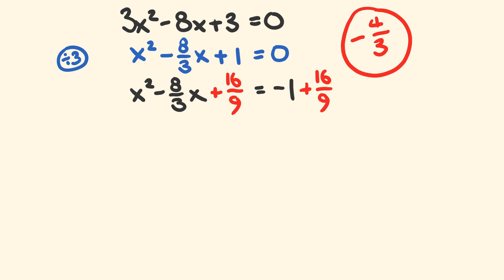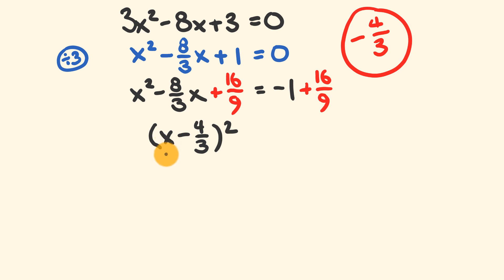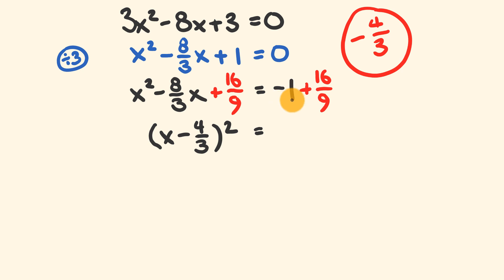Now we work out the next part. The left-hand side is a perfect square, so we write it as x minus 4 over 3, all squared. You can verify this by expanding x minus 4 over 3 times x minus 4 over 3. Notice that negative 4 over 3 is the same value we jotted down earlier. On the right side, we combine terms: negative 1 equals negative 9 over 9, so negative 9 over 9 plus 16 over 9 equals 7 over 9.